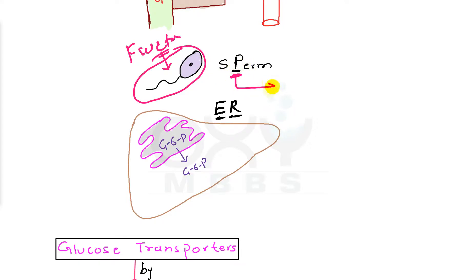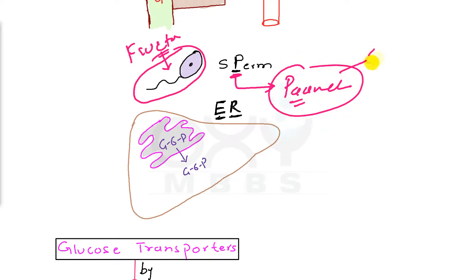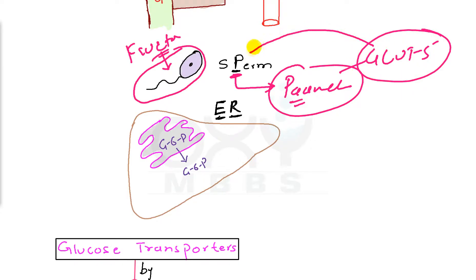Sperm takes fructose sugar through which transporter? From the P in sperm we can derive number 5, so GLUT5 is present in the sperm for the uptake of fructose.